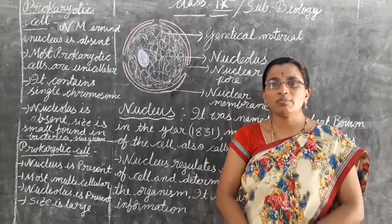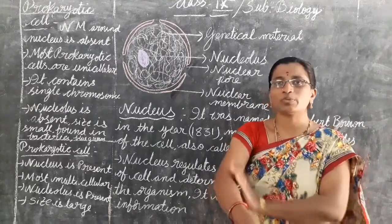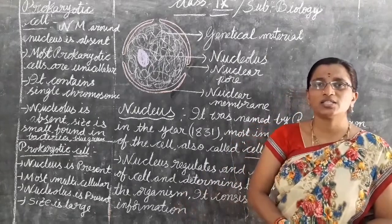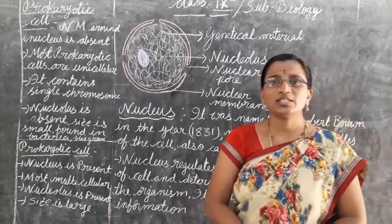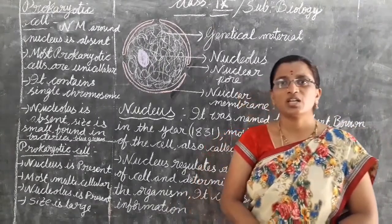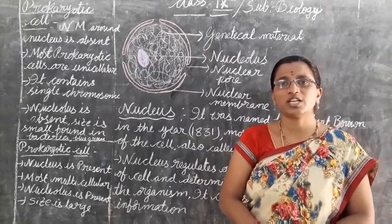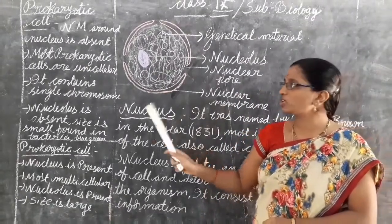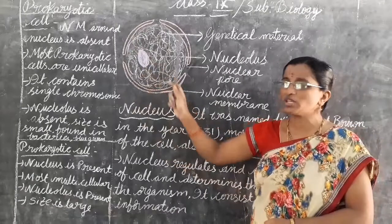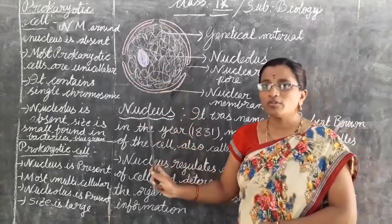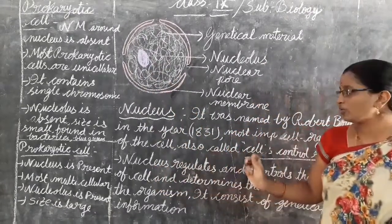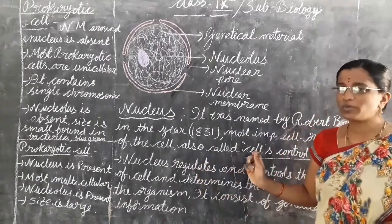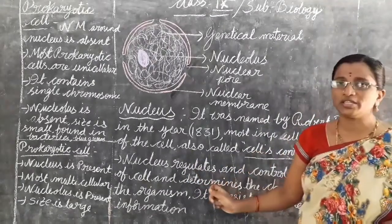The cell membrane, present in both plant and animal cells, gives protection to the entire cell and helps in the transport of substances. Similarly, the nuclear membrane gives protection to the entire nucleus. The nucleus was discovered by Robert Brown in the year 1831.